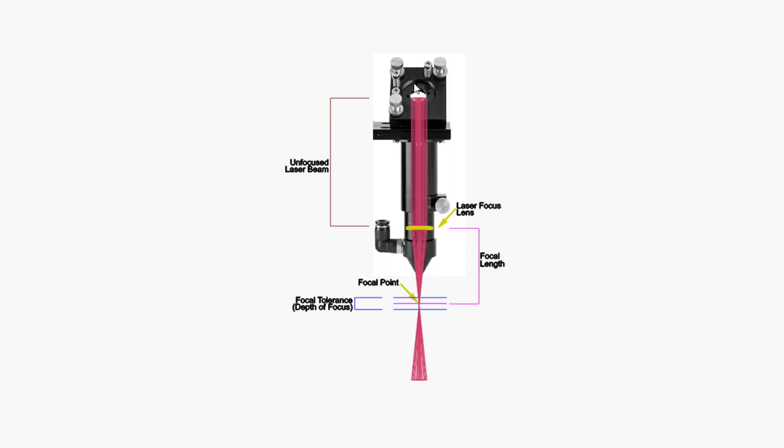This here is mirror 3 on the laser machine and the unfocused laser beam hits that mirror and reflects it down through the laser lens which sits here and then the beam is focused where it converges and diverges here at the focal point. Now the focal tolerance or depth of focus is indicated here in the blue lines and that is the area that is most efficient for cutting or engraving.